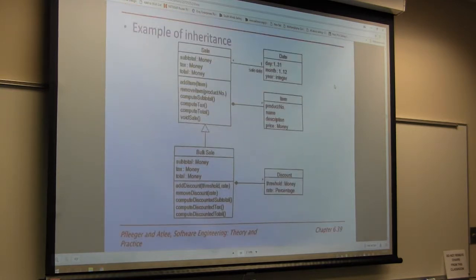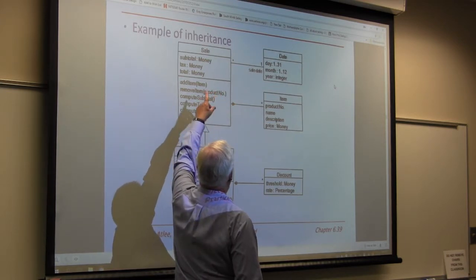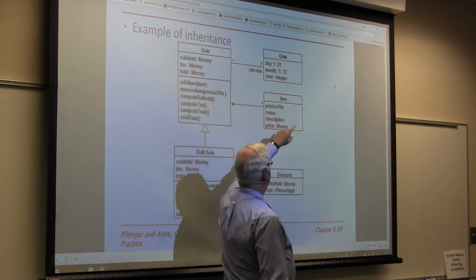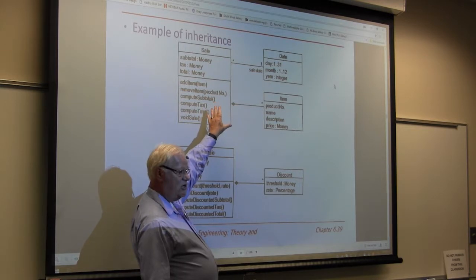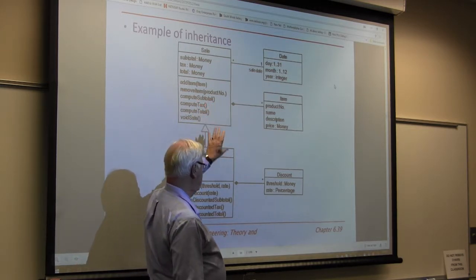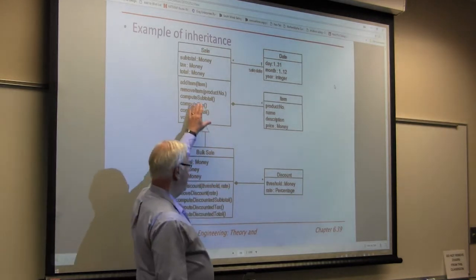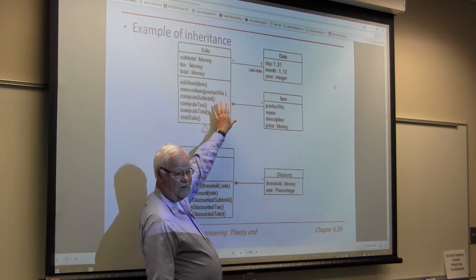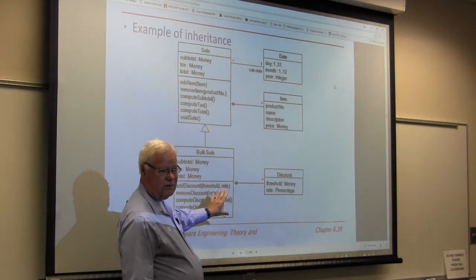Here's an example of inheritance. What we originally set up was an object called 'sale,' which dealt with subtotal, tax, and money, and had methods referring to date and items. That was a retail sale. We then inherited from that to create a more robust system that also dealt with bulk sales — inheriting everything from the original without reinventing the wheel.